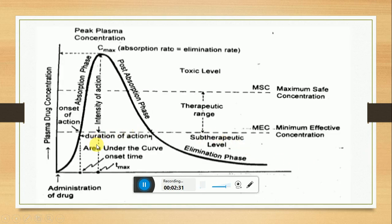Coming back to this graph — the peak plasma concentration time profile curve. The first pharmacokinetic parameter is Cmax. Cmax is the peak plasma concentration, meaning the maximum concentration of drug in the blood plasma.